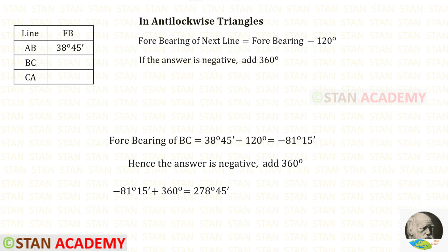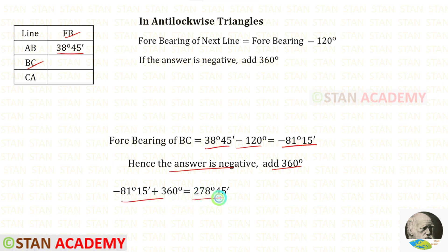Let us find the forebearing of BC. 38 degrees 45 minutes minus 120 degrees gives us negative 81 degrees 15 minutes. Since the answer is negative, we have to add 360 degrees. When we add, we get 278 degrees 45 minutes.